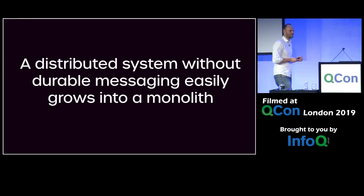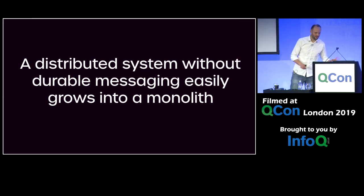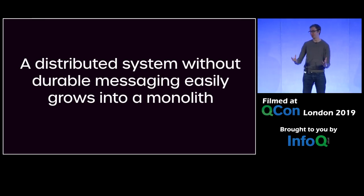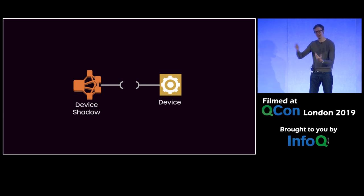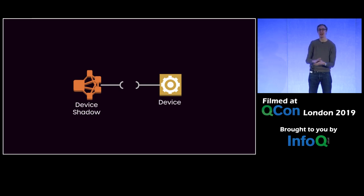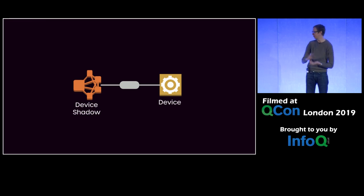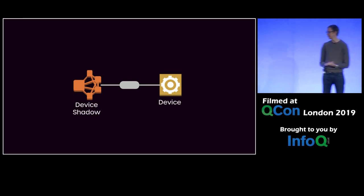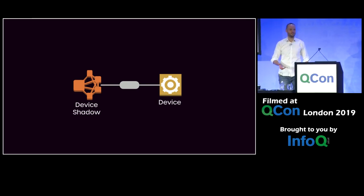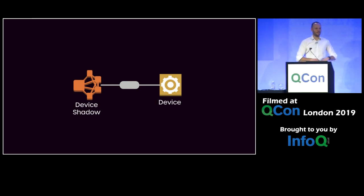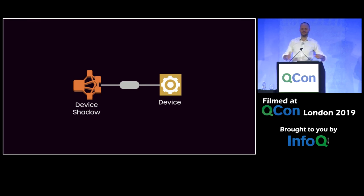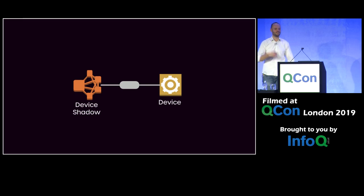We have a couple of click-baity slides, but there is substance behind them — exactly the kinds of things we observed while building this system, with tips to avoid them. The first: a distributed system without durable messaging easily grows into a monolith — a distributed monolith, which is even worse. We have a device and we want to put something in front of it so commands go through a shadow component. Can we just connect these services with REST APIs? That sounds perfectly sensible — simple HTTP API, reactive component in front of it.